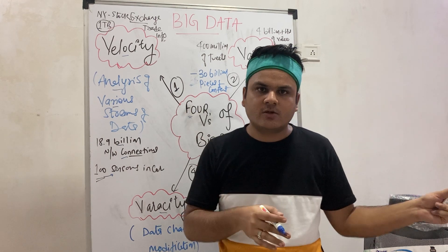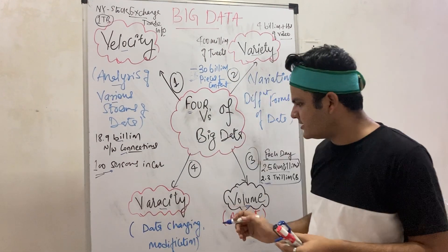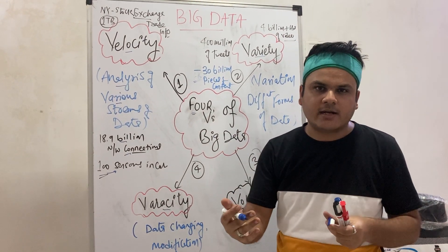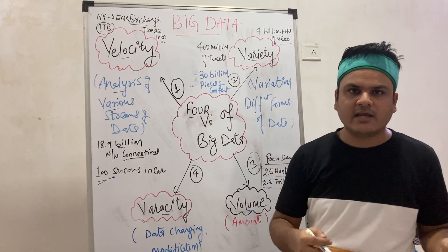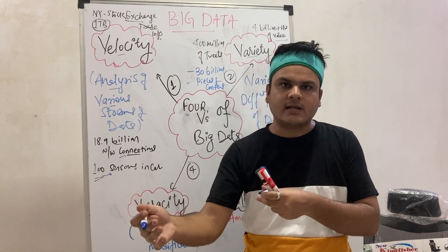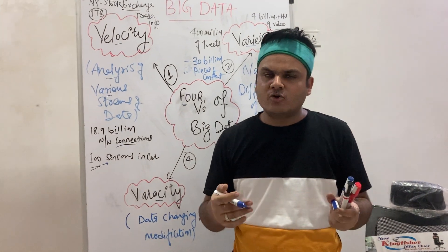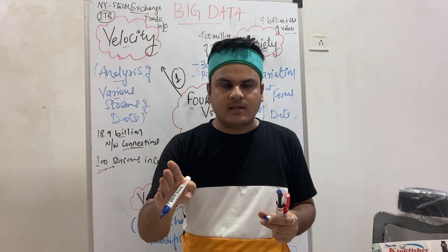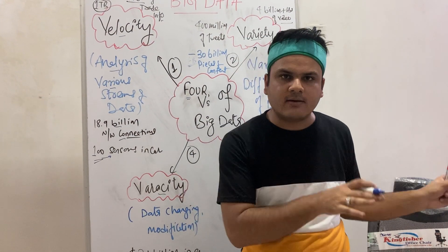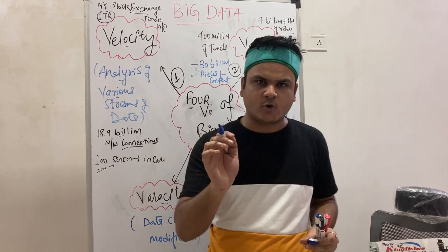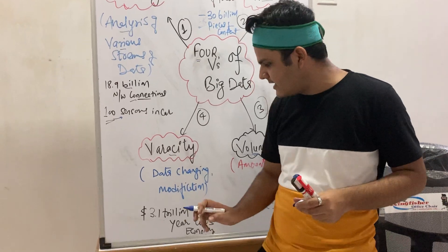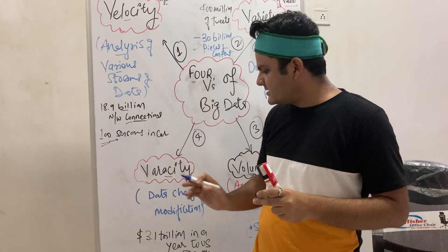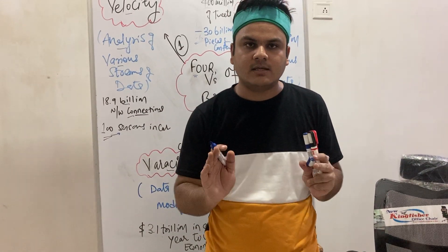The next one is veracity — it is generally about the uncertainty of data. Uncertainty of data means data changes, modifications, and corruption in the data — essentially, the untrustworthy aspects of data. In a recent survey, around one in three CEOs did not believe the information available on the internet. In the US economy, each year around 3.1 trillion US dollars are lost due to the uncertainty of data.